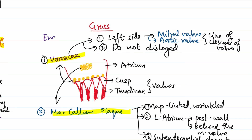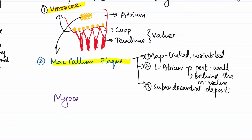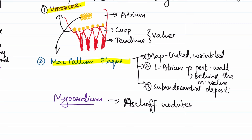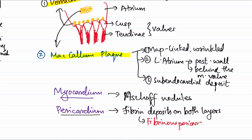The gross features discussed are endocardial features. In the myocardium, Aschoff nodules will be seen microscopically at several sites. In the pericardium, there will be fibrin deposition between the two layers of the pericardium, leading to fibrinous pericarditis. This is also called bread-and-butter pericarditis, and it presents clinically as a pericardial friction rub — one of the clinical presentations of rheumatic fever.